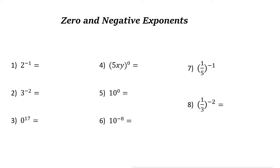Zero and negative exponents. The zero exponent rule is this: x to the power of zero, or any number to the power of zero, the answer is just one. So x to the power of zero is one, or any other number to the power of zero, the answer is one. This is the zero exponent rule.